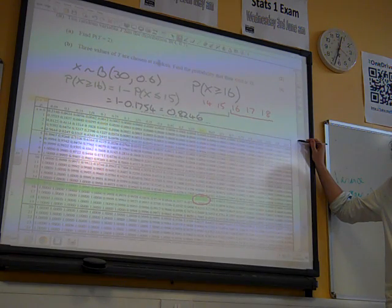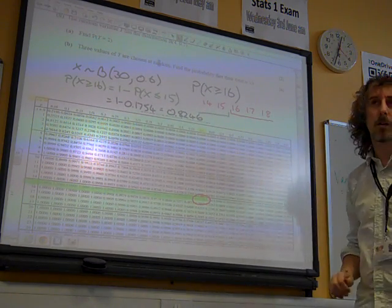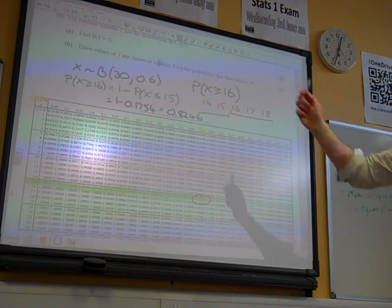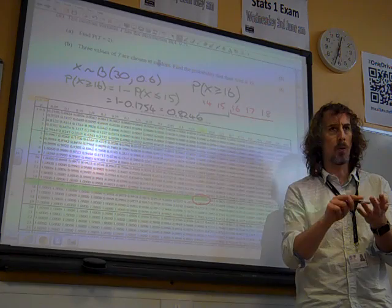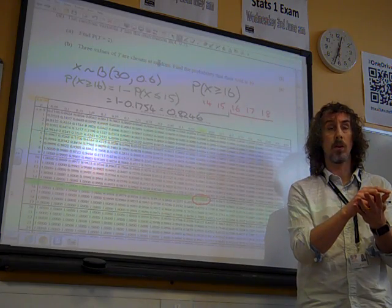Now this is a bit of an odd concept to think about. So three values of y. Well, y is a result of these four trials. And so y can take the value of 0, 1, 2, 3, or 4 because it's the number of successes.